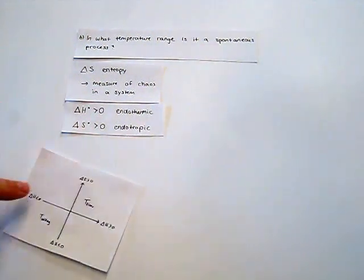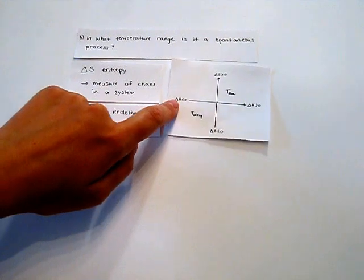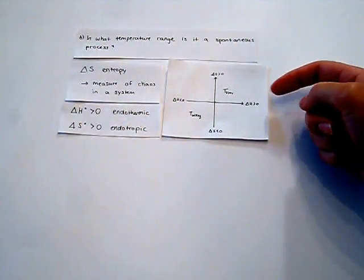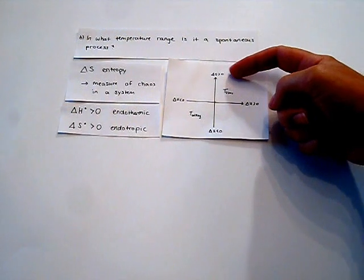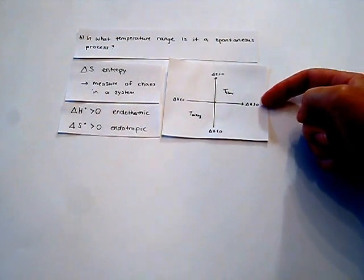If we now look at this graph we are in this quadrant because our delta S is bigger than zero and our delta H is bigger than zero.